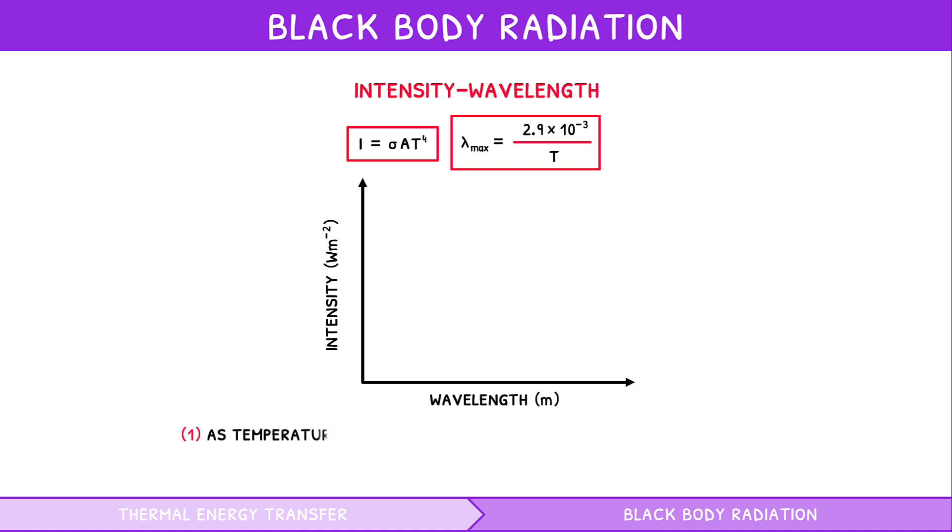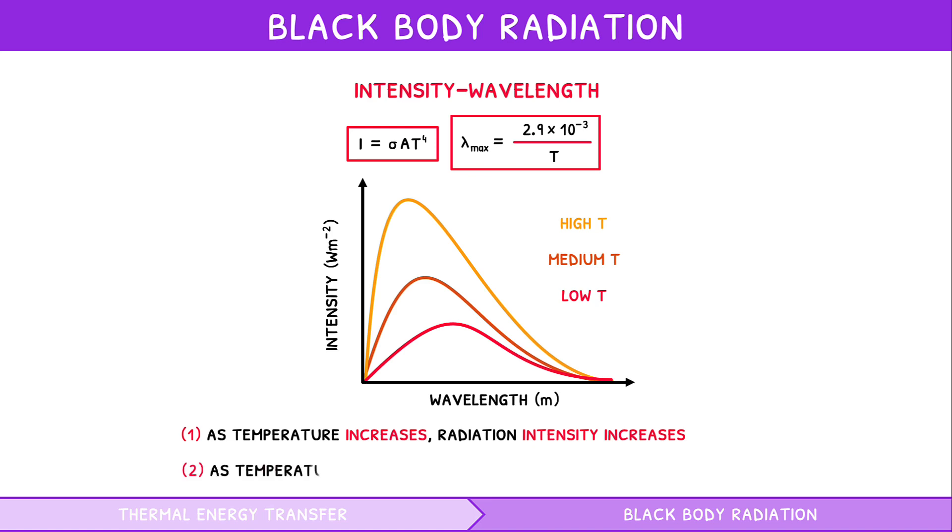As temperature increases, the radiation intensity increases, in accordance with the Stefan-Boltzmann law. As temperature decreases, the wavelength at maximum intensity decreases, in accordance with Wien's displacement law.